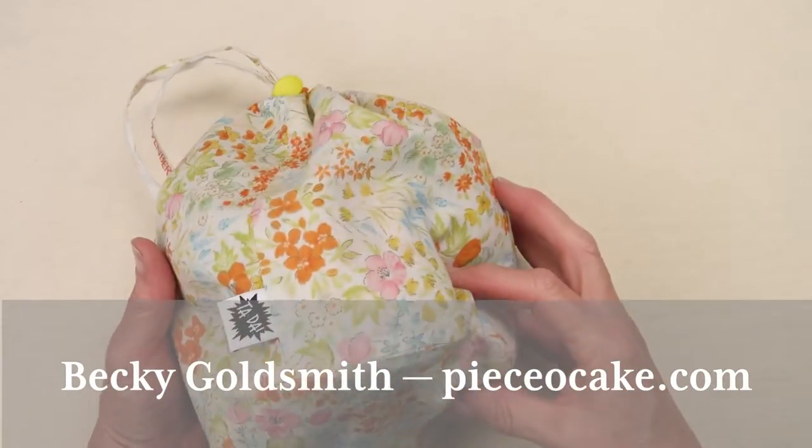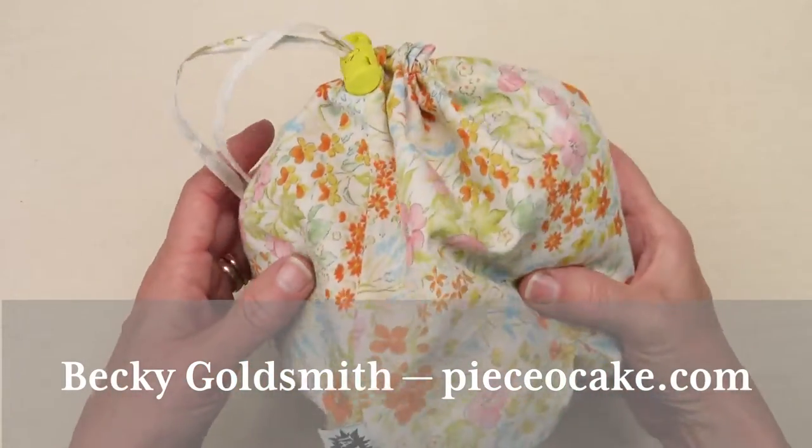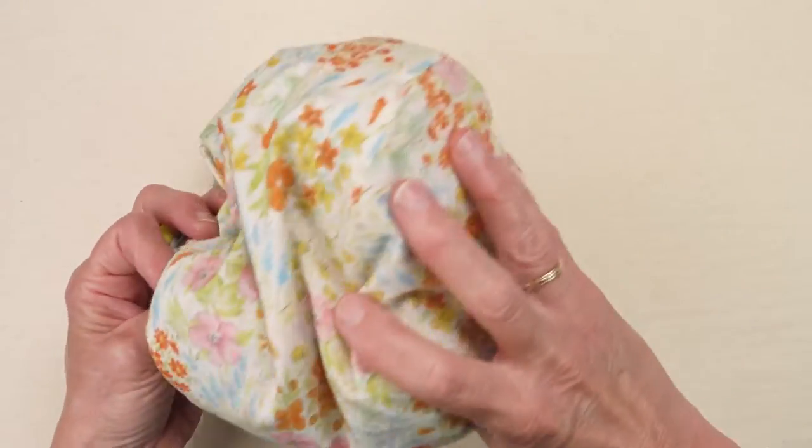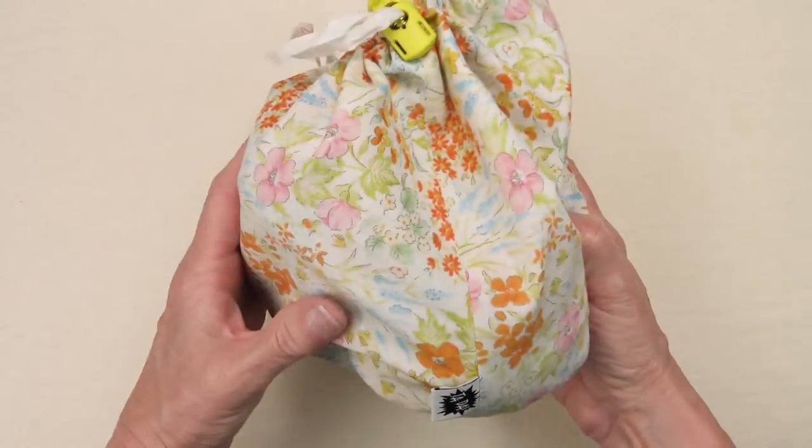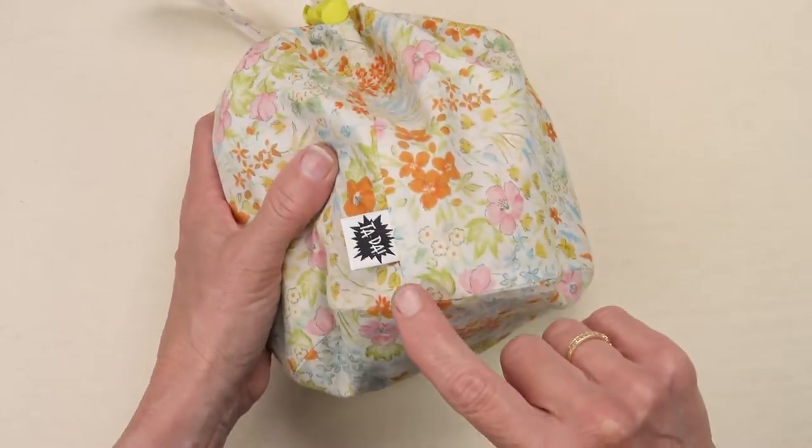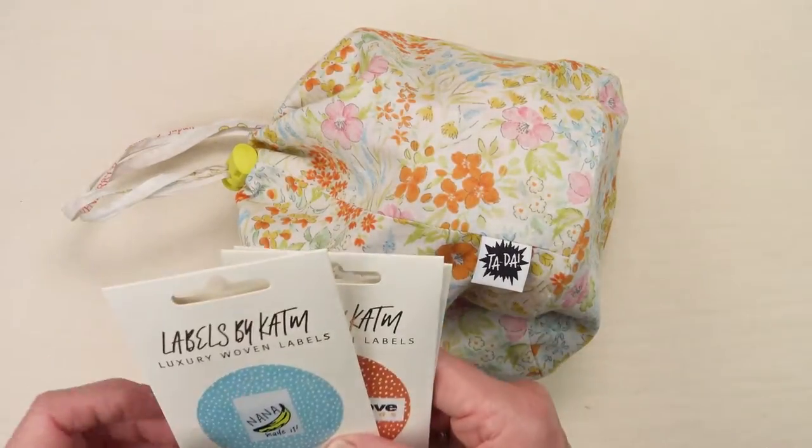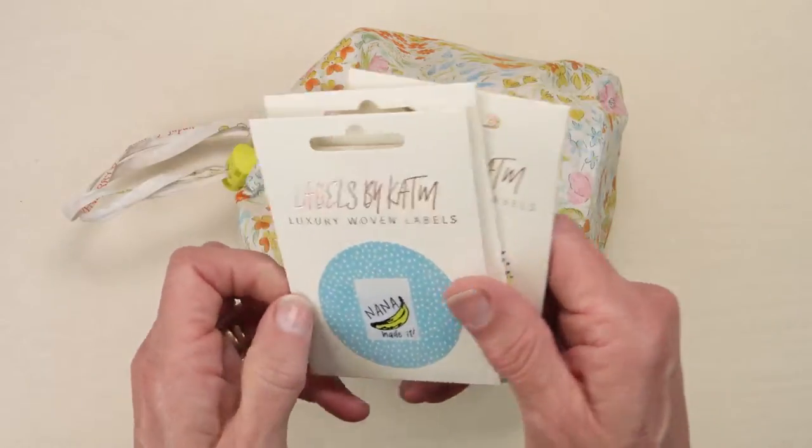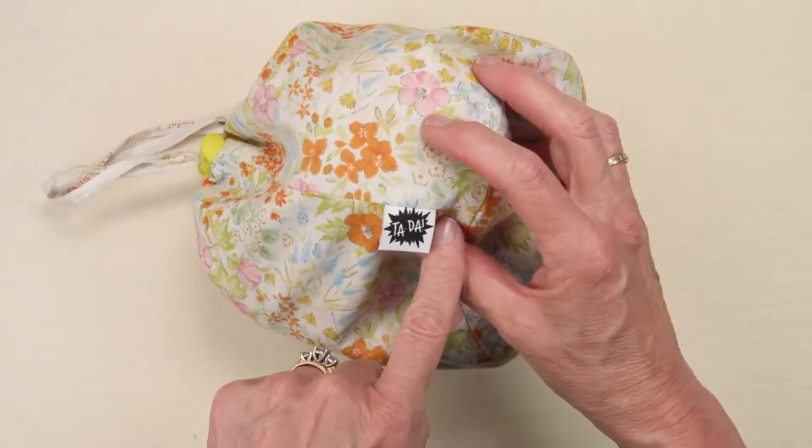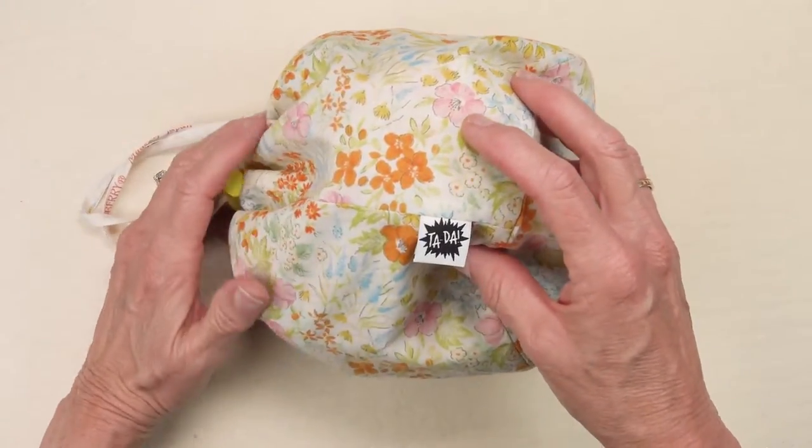Hello everyone. I'm Becky Goldsmith from Piece of Cake and I'm going to show you how to make this cute drawstring bag. Notice that it has a very cute label on it. These labels come from Katie and the Machine. I happen to like this one but there are many other choices.